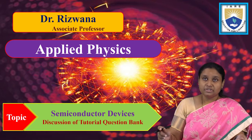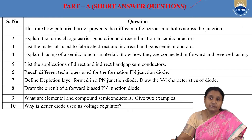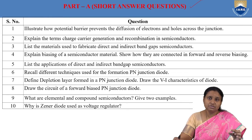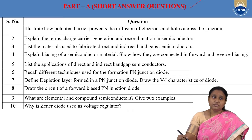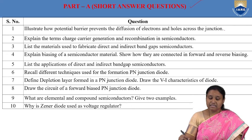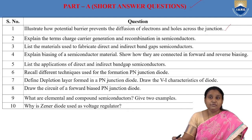Coming to our question bank, first we are going to discuss short answer questions where the answer should be given in short form. Coming to the first question: illustrate how potential barrier prevents the diffusion of electrons and holes across the junction.